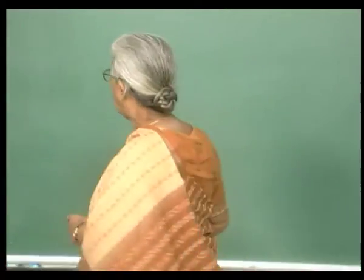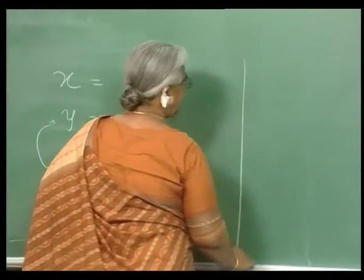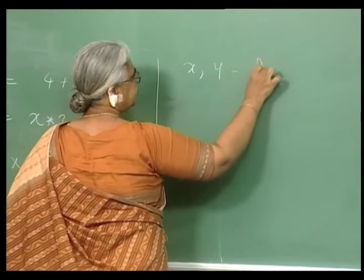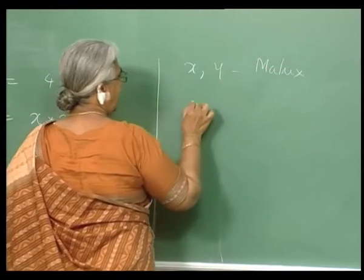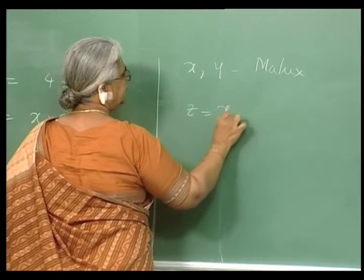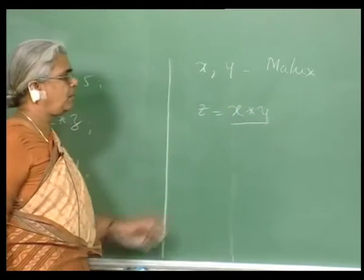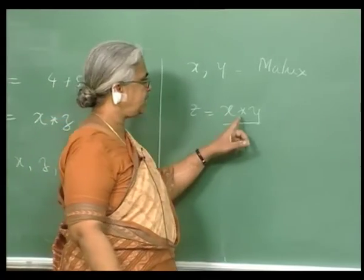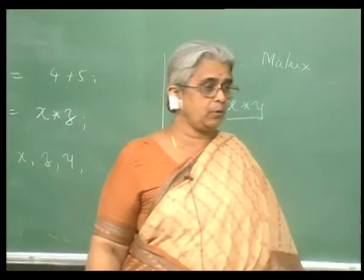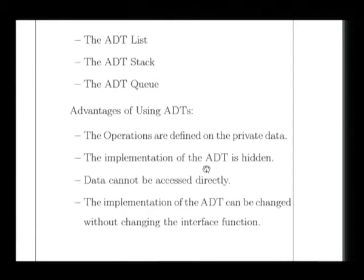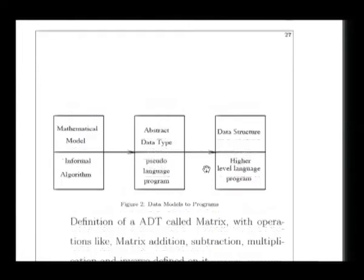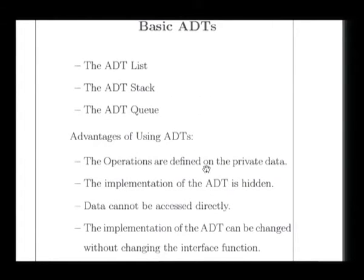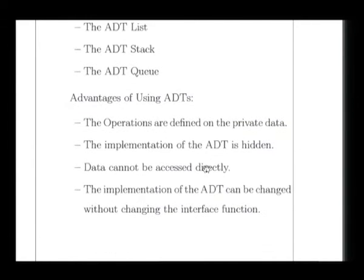For example, I would say x and y are of type matrix, and I can write z equals x star y, meaning it will perform matrix multiplication where star is the multiplication operation. Clearly these are not available in current-day programming languages. The whole idea of using ADTs is that the operations are defined on private data, the representation is completely hidden, and the data cannot be accessed directly.